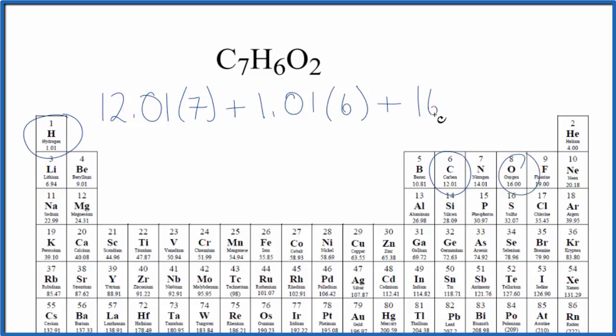16.00 grams per mole, and we have two oxygen atoms. So when we do the math, we find that the molar mass for benzoic acid, C7H6O2, or if you like, C6H5COOH, is 122.13, and the units are grams per mole.